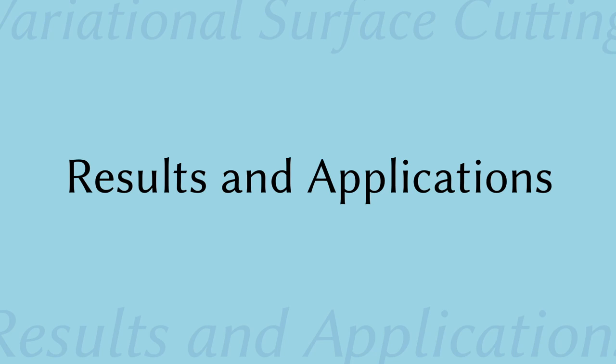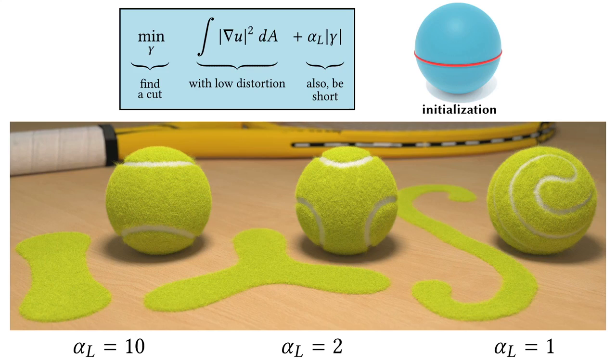Now some results, applications, and extensions of this method. First, we run our flow on a sphere, initializing the cut as a loop around the equator. We visualize the results on tennis balls, where pieces of flat fabric are stretched over hard rubber spheres. With a strong length penalty, our flow recovers the usual tennis ball geometry with two interlocking patches. Weaker length penalties yield alternative designs which have longer seams but even less stretching in the patches.